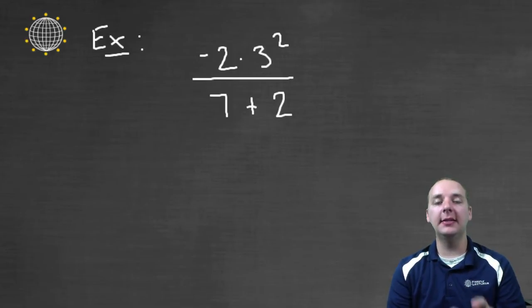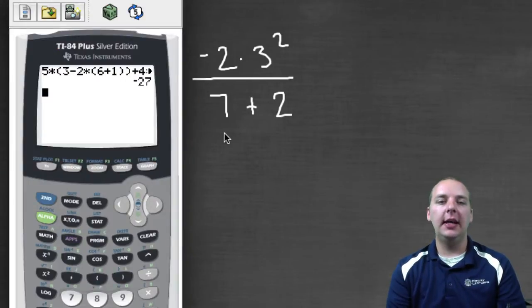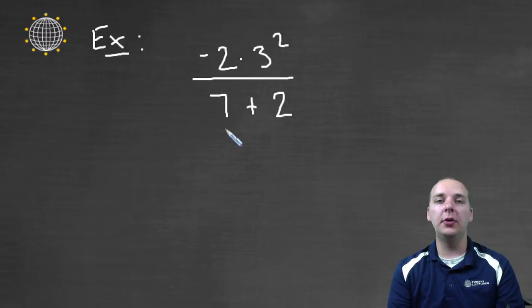Let's look at this example. This is a very common one where a lot of students make mistakes. Because we have division and there's an understood grouping of all the terms in the denominator. We don't literally see a parenthesis.